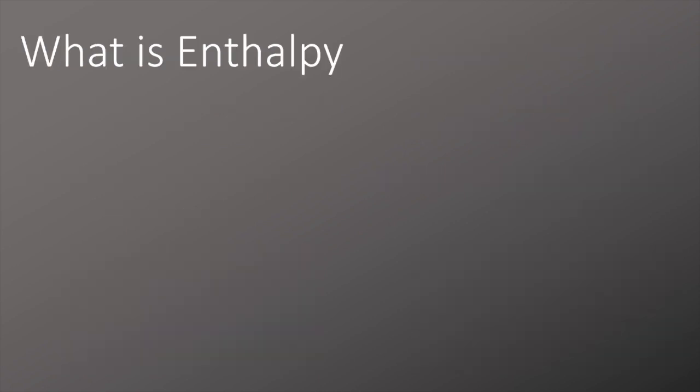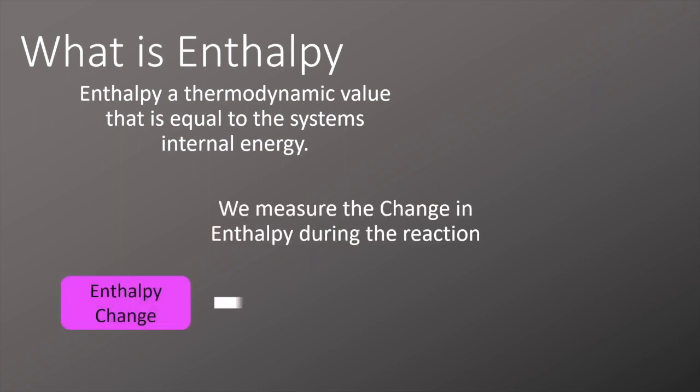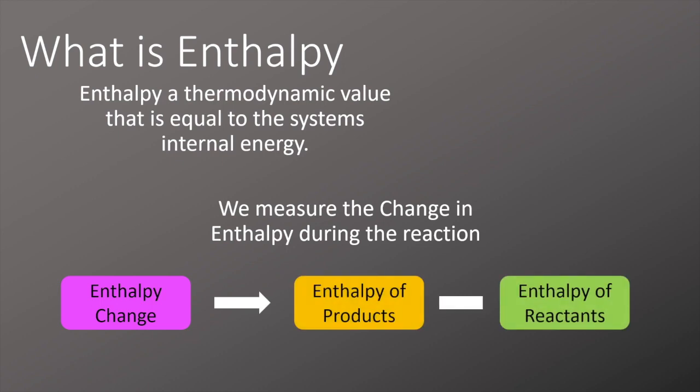So what is this thing we call enthalpy? Enthalpy is a thermodynamic value which is equal to the system's internal energy, which means it's the same as the heat energy stored inside the chemicals. We can't actually measure the enthalpy for individual chemicals, but we can measure the enthalpy change during a chemical reaction. We can think of it a little bit like this: the enthalpy change is equivalent to the enthalpy of the products minus the enthalpy of the reactants. We measure the enthalpy change because we can measure the change in energy of the surroundings during a chemical reaction.